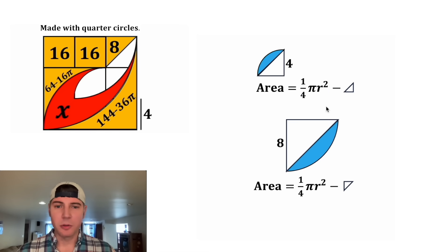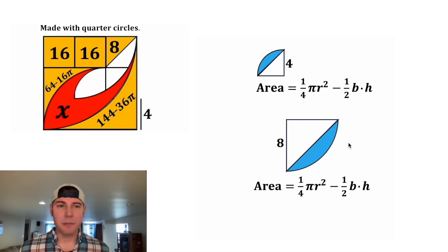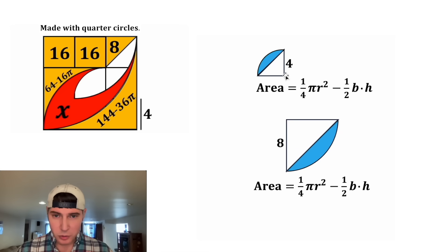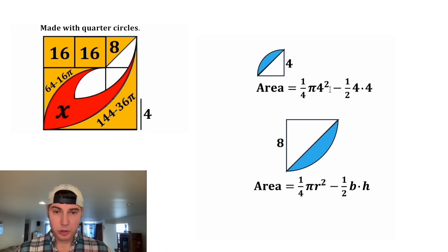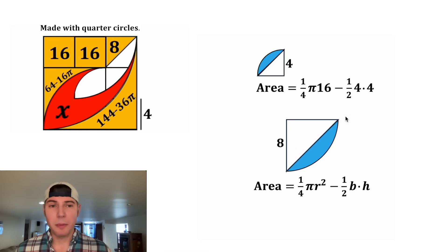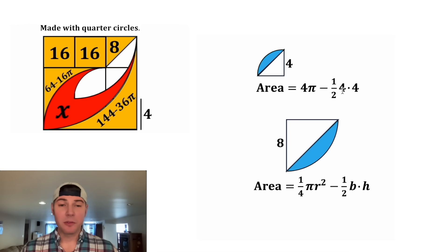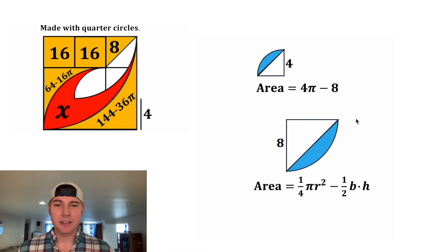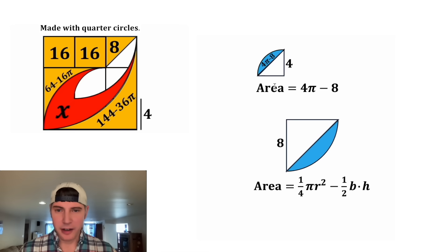The area of a quarter circle is equal to one-fourth π r squared, and the area of these triangles is one-half base times height. Let's solve this one first. The radius of this quarter circle is equal to 4, and the base and height of this triangle are both equal to 4. 4 squared is 16, and one-fourth of 16 is 4. 4 times 4 is 16, and one-half of 16 is 8. So for this segment, the area is 4π minus 8. Let's color that orange.